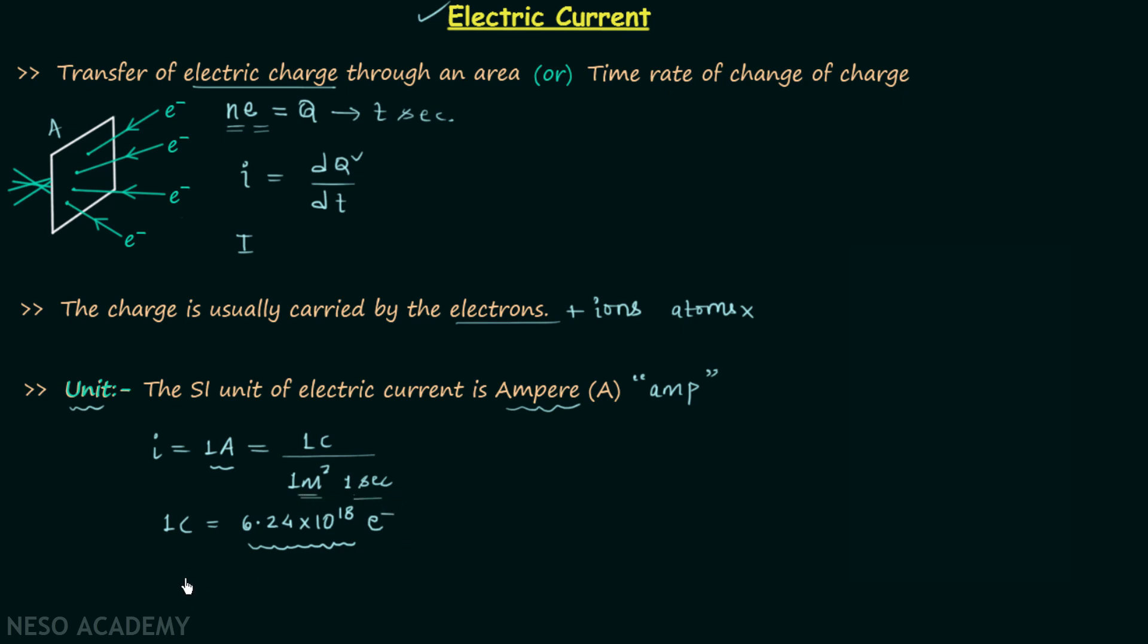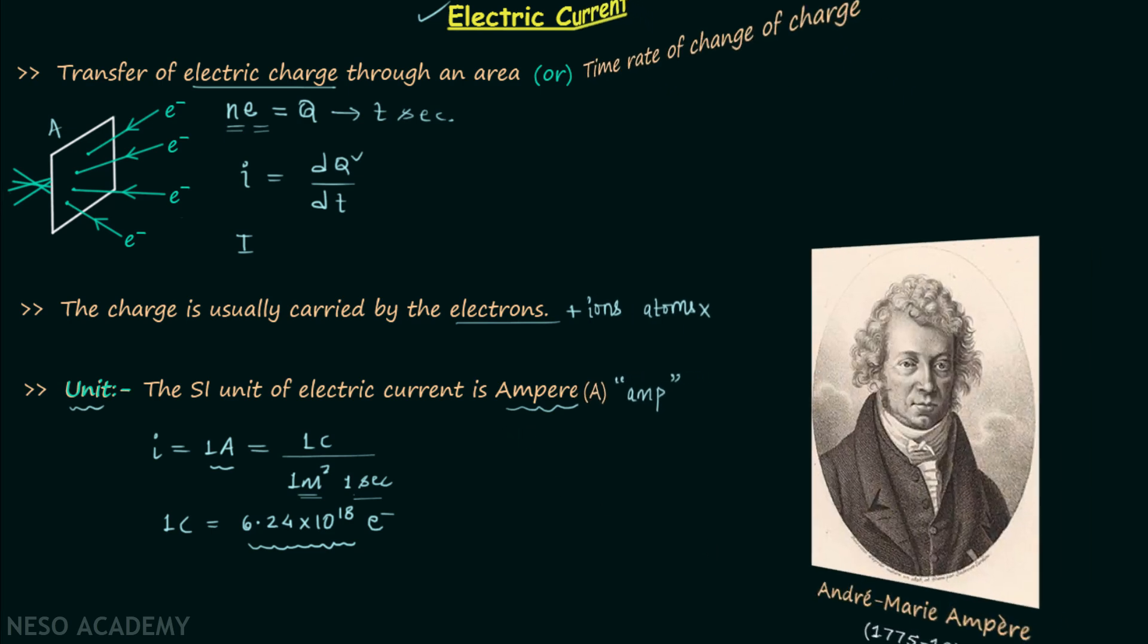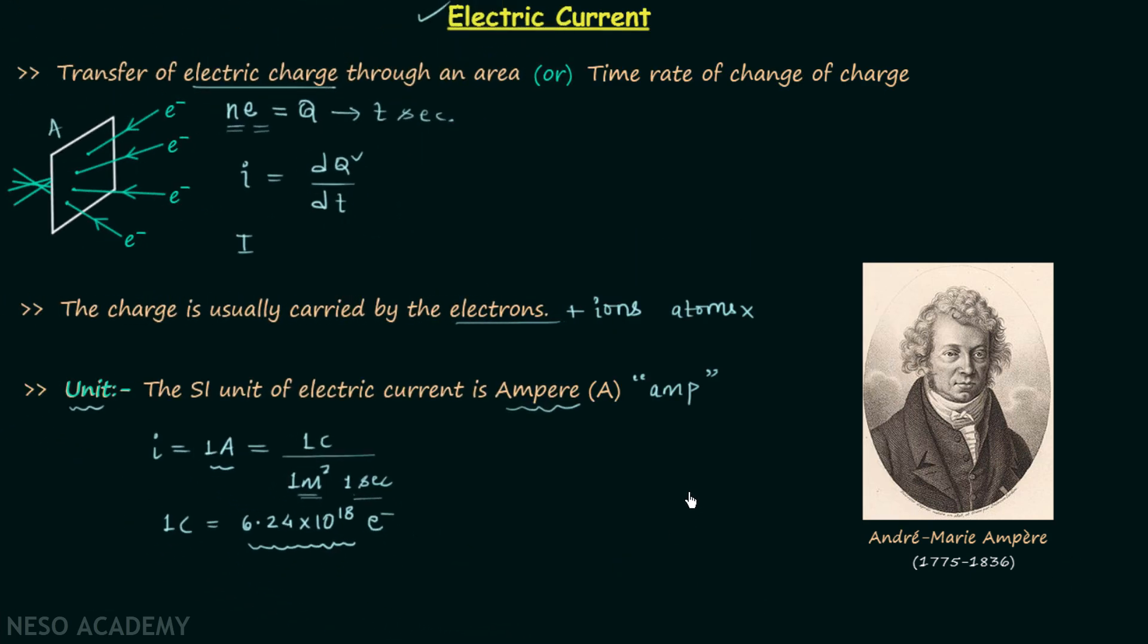Ampere is the unit named after French physicist André-Marie Ampere. Now I will give you some examples of current depending on their behavior with change in time.